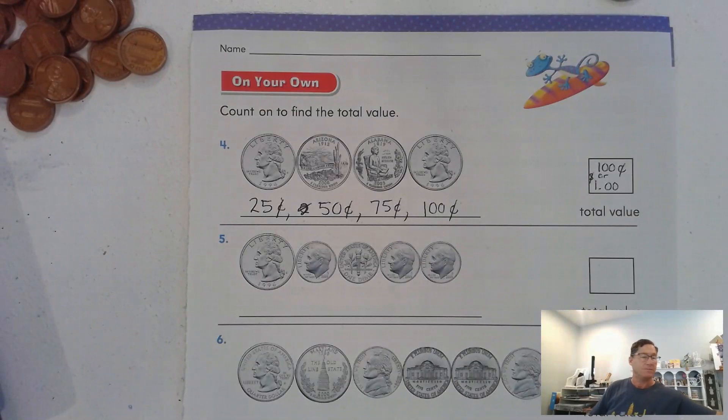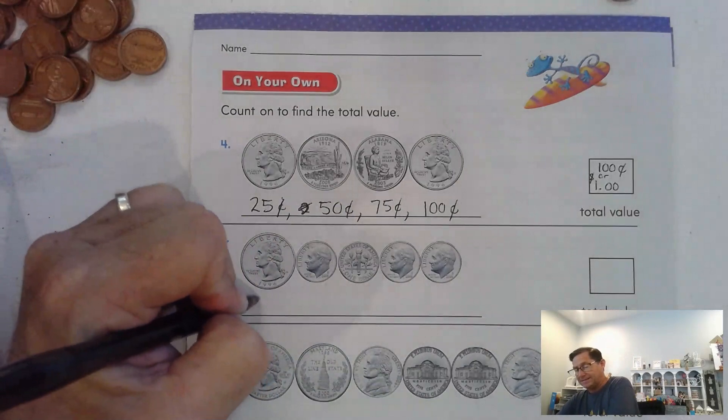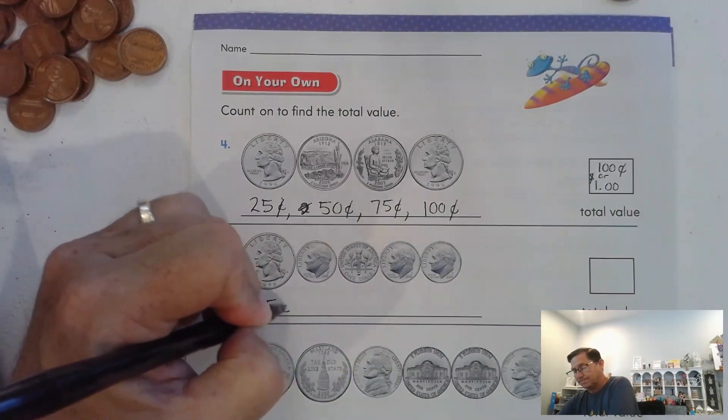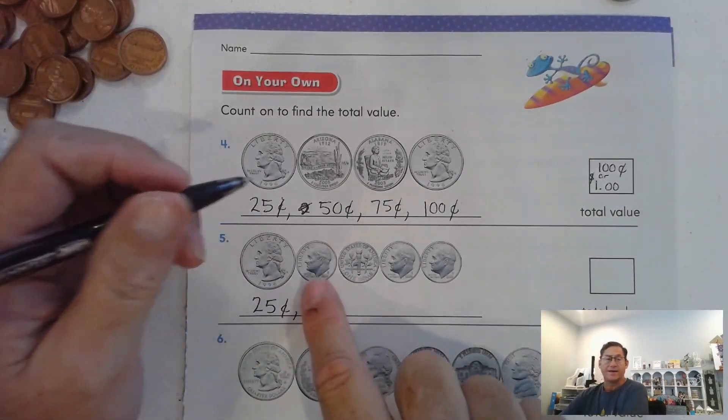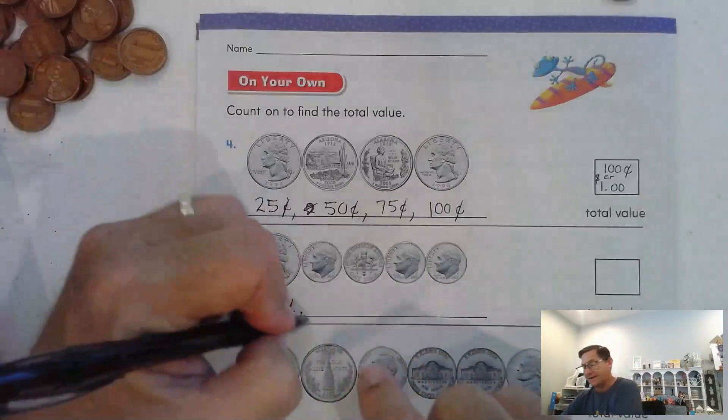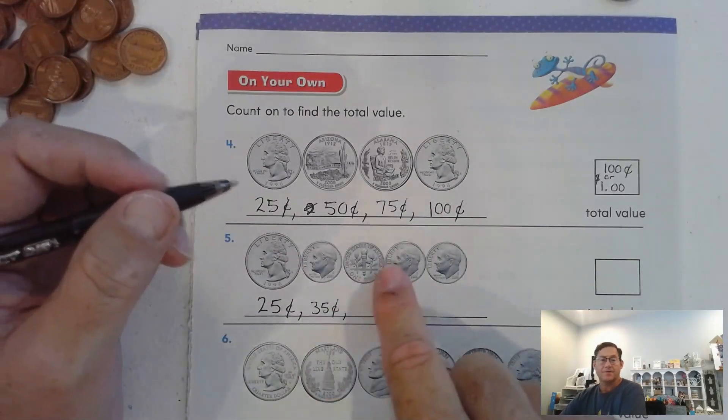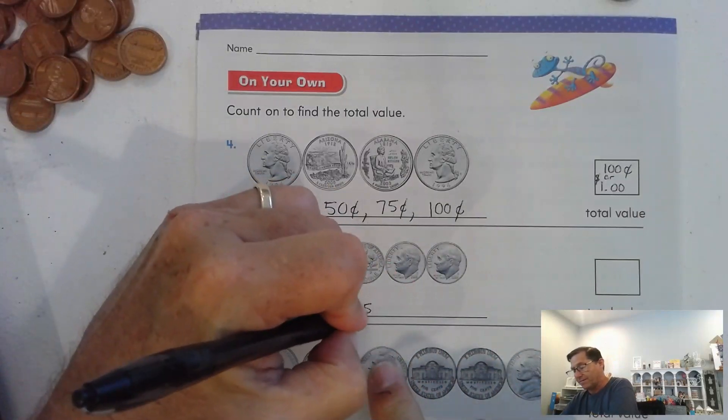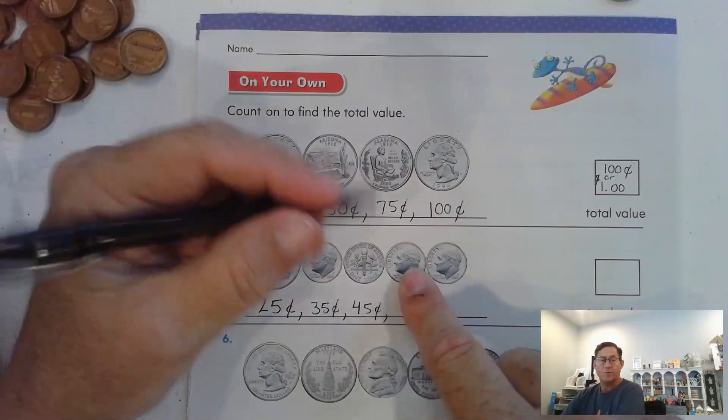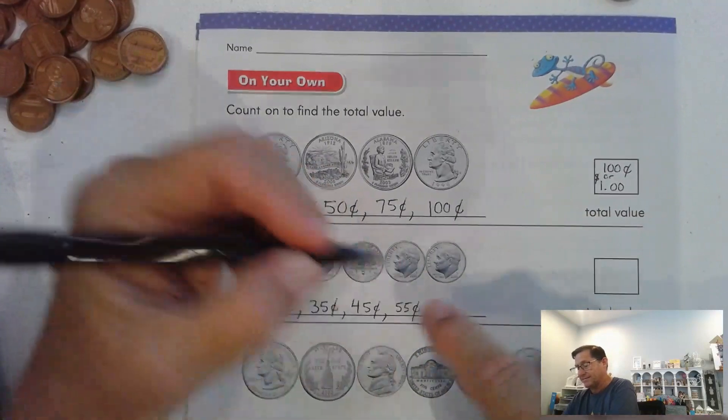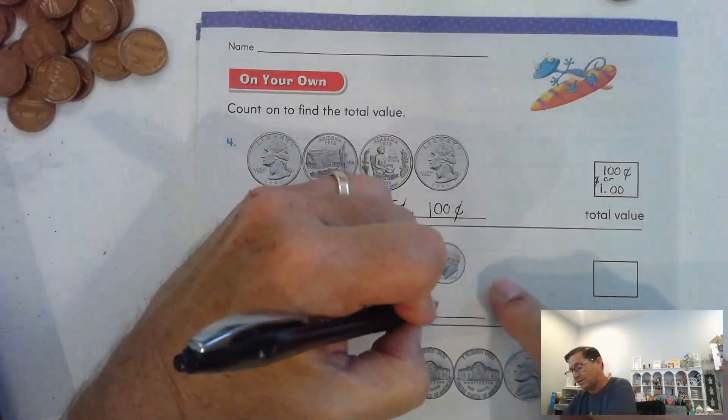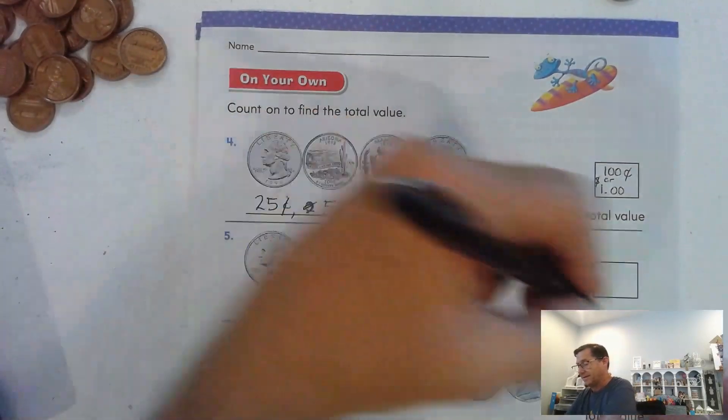Let's look at number five. 25 cents. Then we're going to count on by 10s: 25 and 10 is 35 cents, 35 and 10 more is 45 cents, 45 and 10 more is 55 cents, 55 and 10 more is 65 cents.